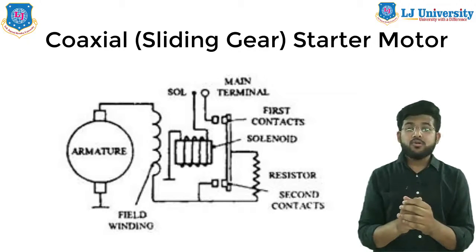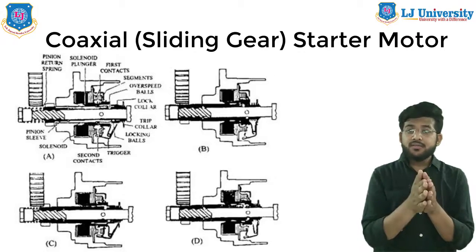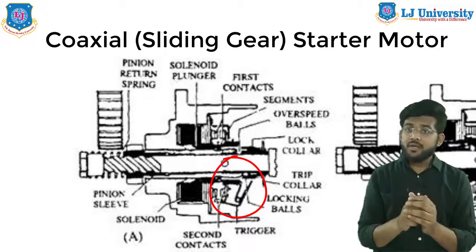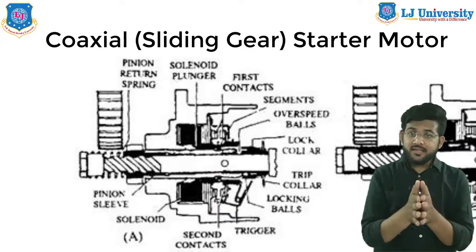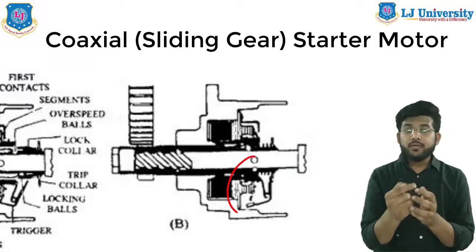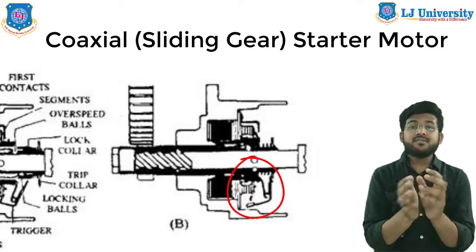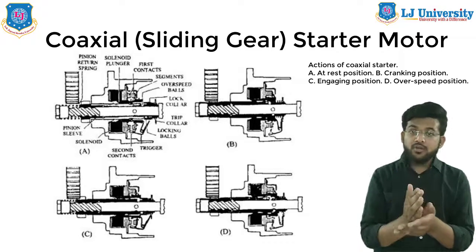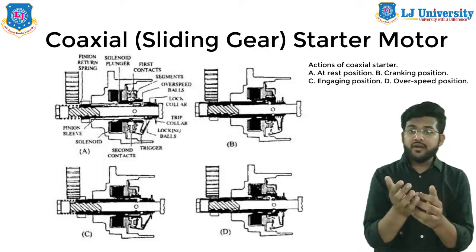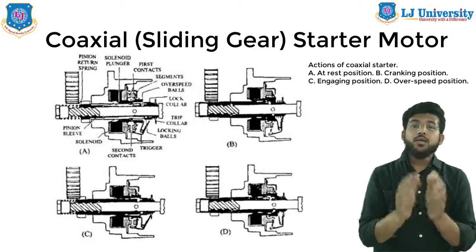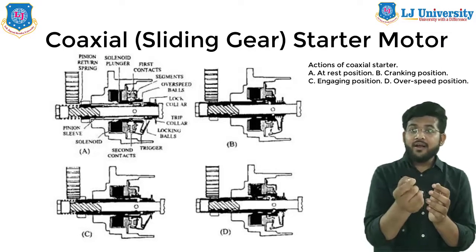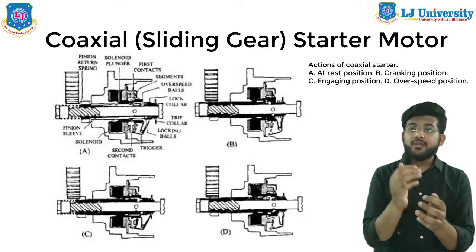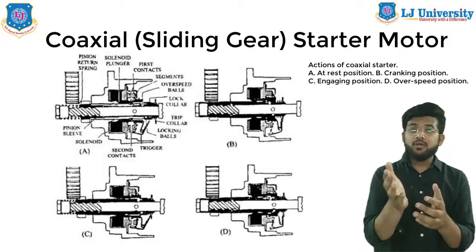One type of coaxial motor is the Lucas type. This design uses four steel balls which lock the pinion sleeve to the shaft to avoid pre-engagement of the pinion during engine misfiring. When the engine starts and operates on its own, over-speeding of the motor is prevented by the centrifugal action of a set of steel balls placed adjacent to the locking balls. When the preset speed is reached, centrifugal force moves the locking collar outward, allowing the pinion to disengage. A return spring at the flywheel end of the armature shaft helps pinion disengagement and holds the pinion clear of the flywheel during engine running, preventing damage.